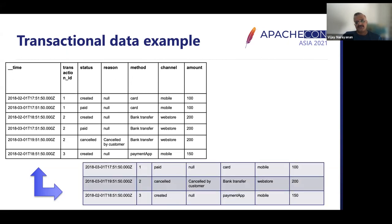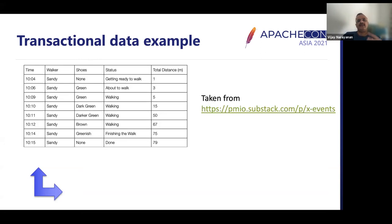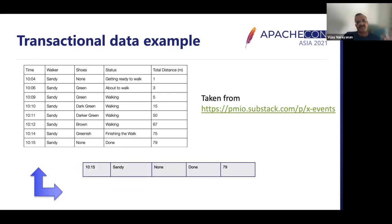In traditional systems, this would collapse into a single record, because a traditional system would update data based on a primary key so that at any one point a particular transaction ID has essentially one record. The same type of pattern also shows up in, for example, a fitness application tracking when a person starts walking — tracking distance and stages like getting ready to walk, about to walk, walking, finishing walking, and done. Each stage is an event and all events are being captured. In traditional systems, you end up with one final record for that user giving the current status at any given time.